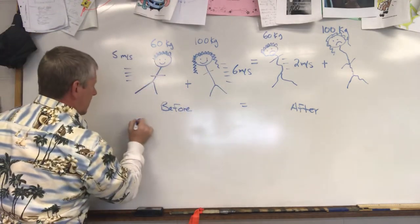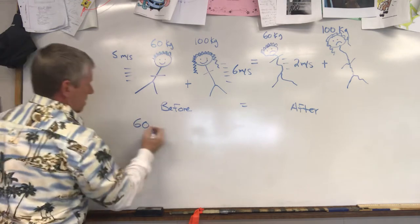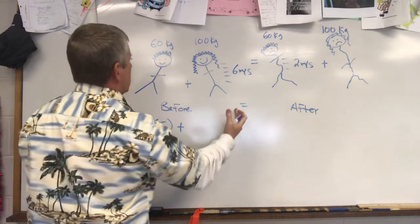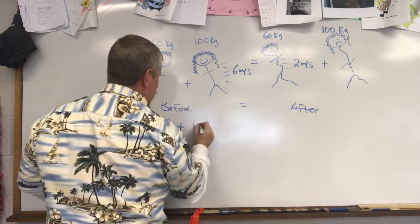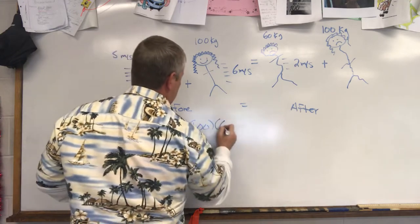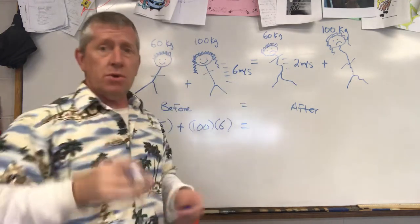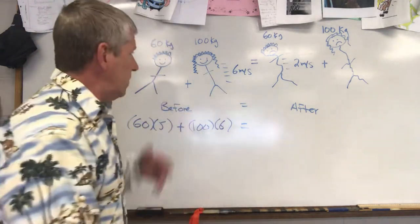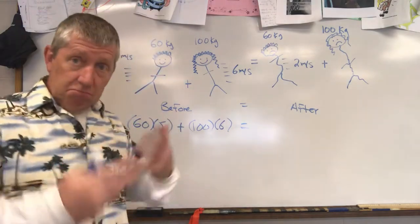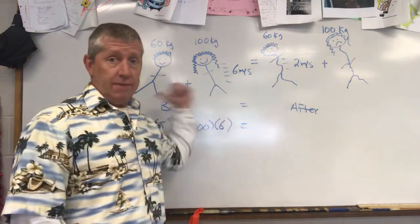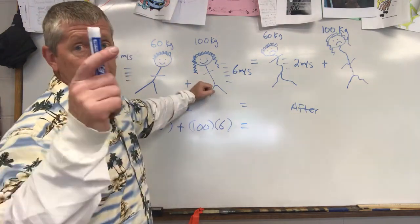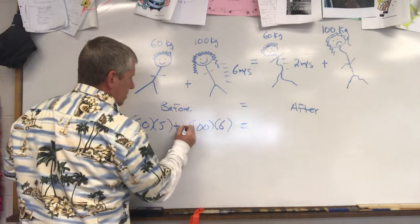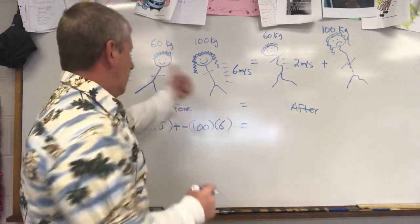So let's get the before momentums totaled. That would be 60 times 5, mass times velocity, plus, so we need a total, 100 times 6. Now hopefully some of you are saying to yourself, wait, what about direction? They're going in opposite directions. Hopefully you're saying that, and that is correct. We have to give somebody a negative. It doesn't matter who we give a negative. Typically I like giving negatives going to the left. So you are going to get a negative in my book. We can give the negative here, we will still get the same answer.